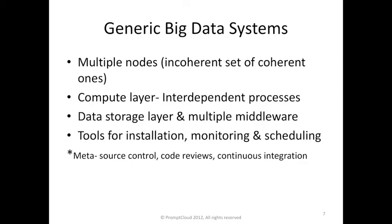They have to communicate somehow, and more often than not they will be on different servers or different nodes. We will have a data storage layer with multiple middleware. Data storage is critical - traditionally people used SQL-based storage, but with big data it is not easy to scale. You make multiple trade-offs: is consistency important? How important is high availability? Multiple processes across nodes talk via some messaging layer. Tools for installation, monitoring, and scheduling are pretty important once you operate on hundreds or thousands of servers.